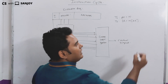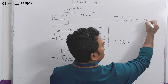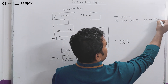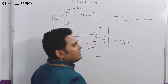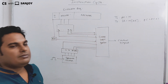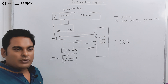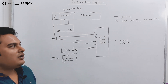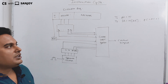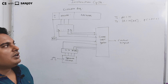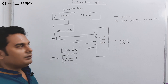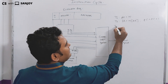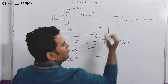Immediately after fetching, the program counter moves to the next location: PC equals PC plus one. So the program counter increments and moves ahead to the next location. The next timing step is T2.